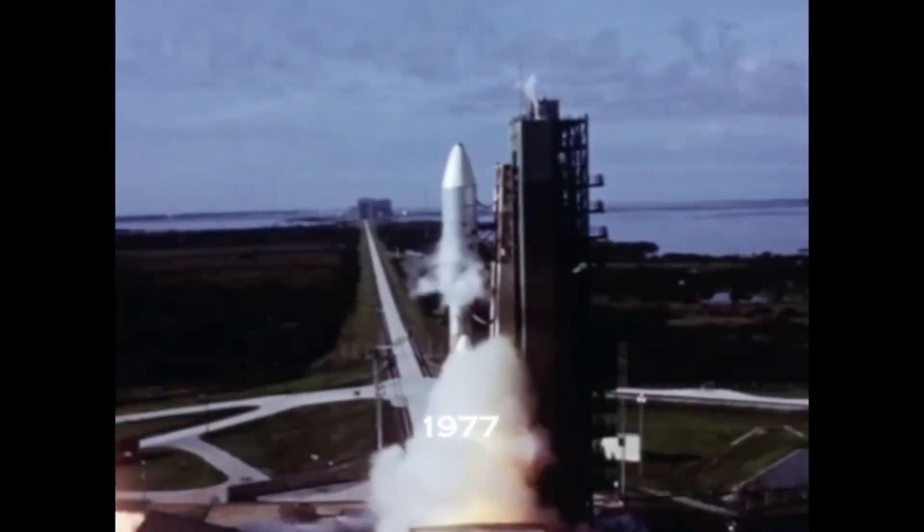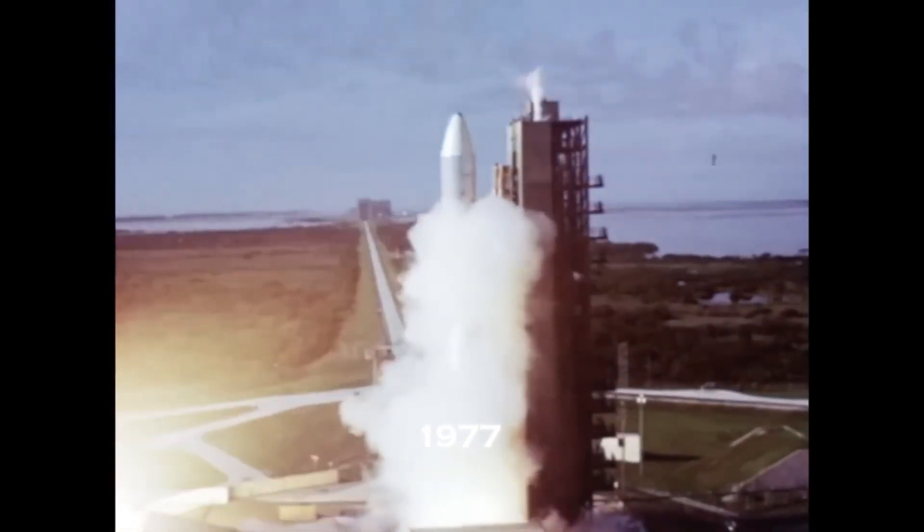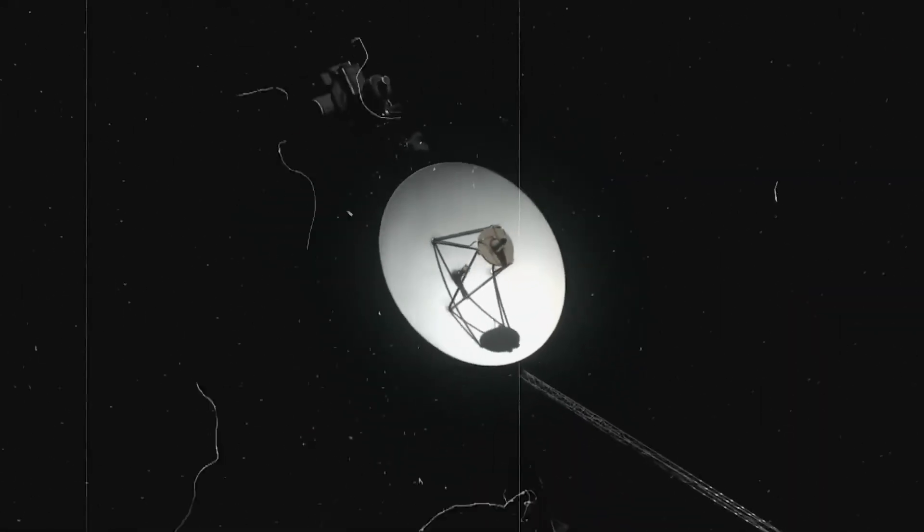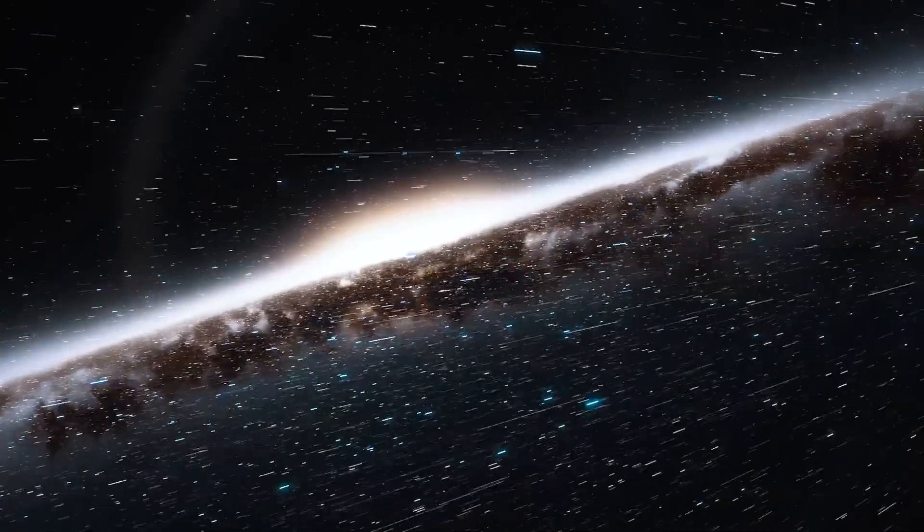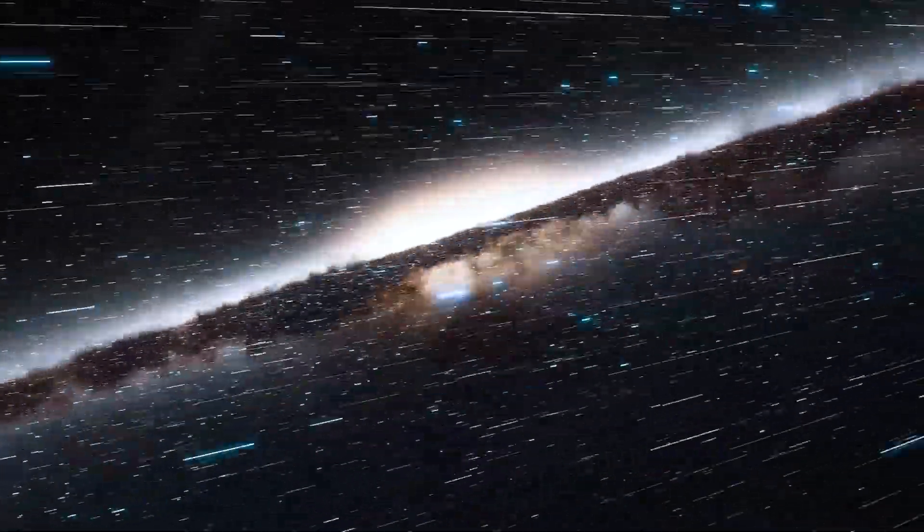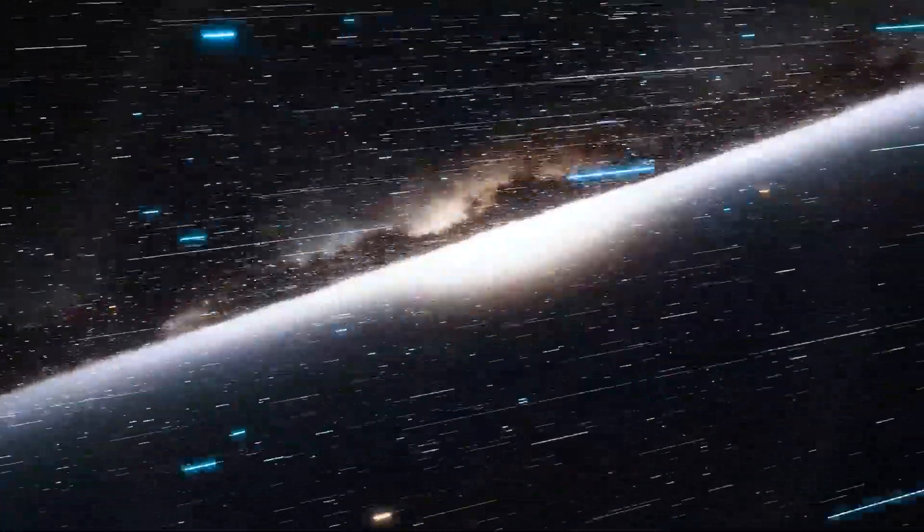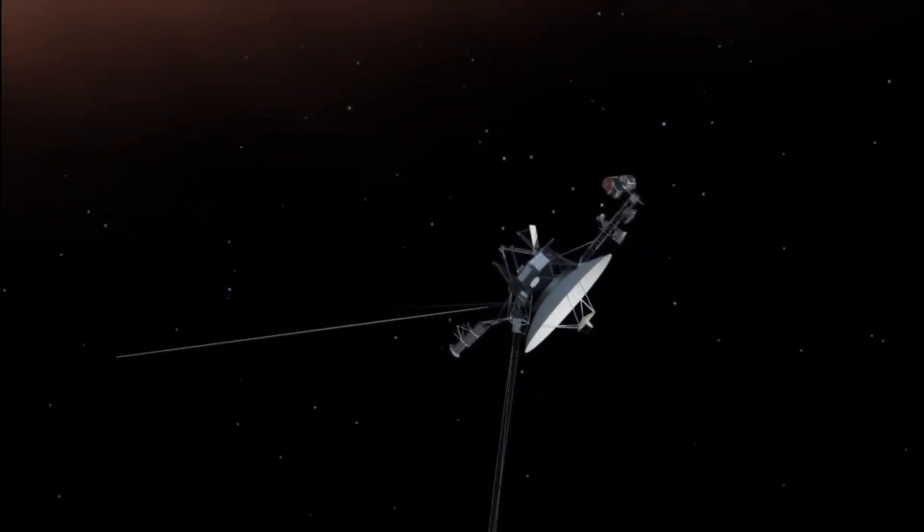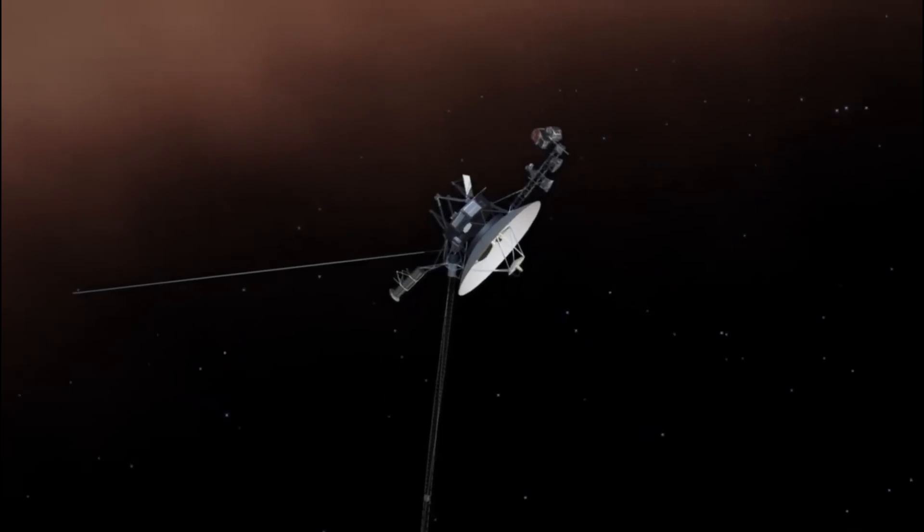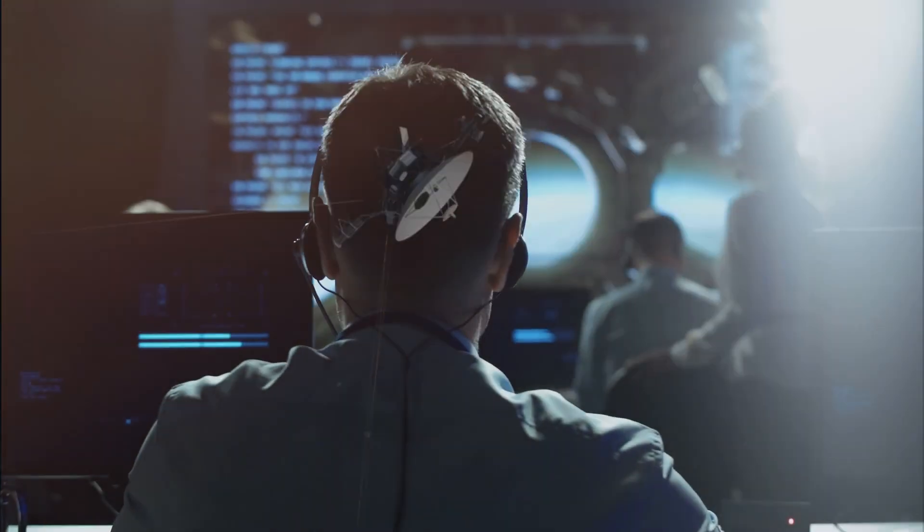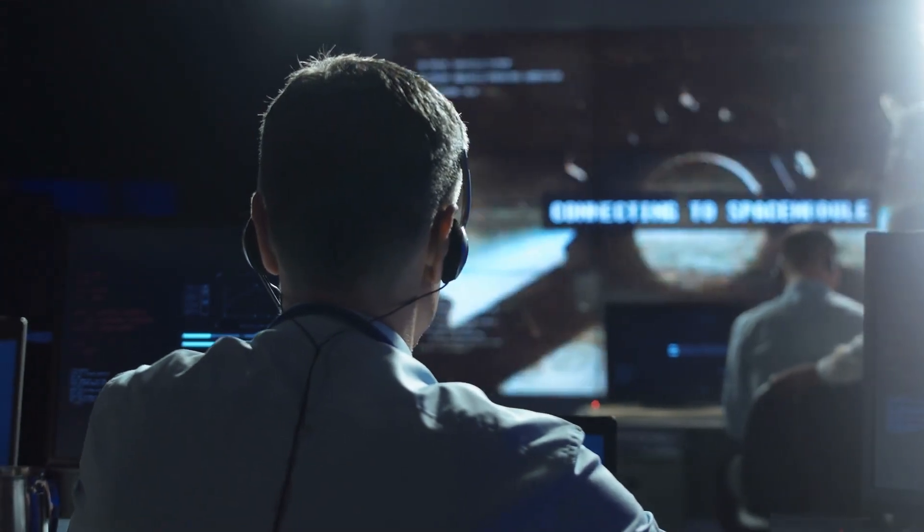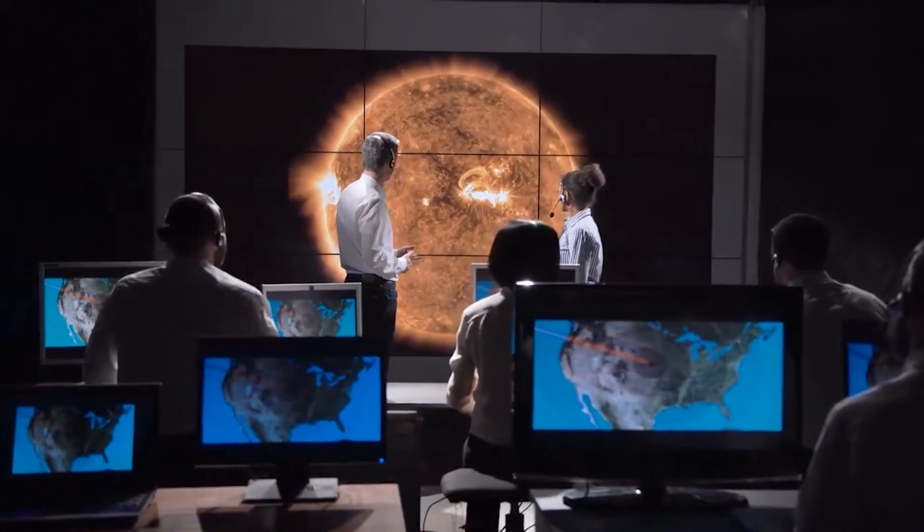Voyager 1 was launched in 1977 with a simple mission, explore Jupiter and Saturn. But once its primary job was complete, NASA made a daring decision to send it beyond the known into interstellar space. As it drifted farther, its instruments kept recording, snapping occasional frames of the blackness around it. One particular image, taken over two decades ago, had always been dismissed as a corrupted data file, useless noise from the dark.